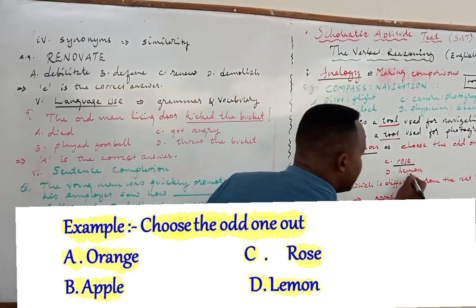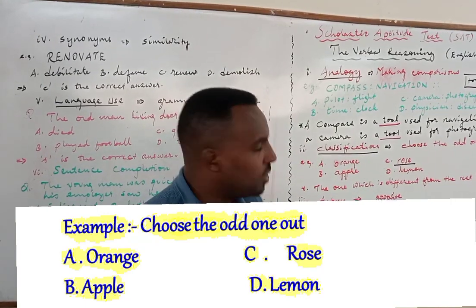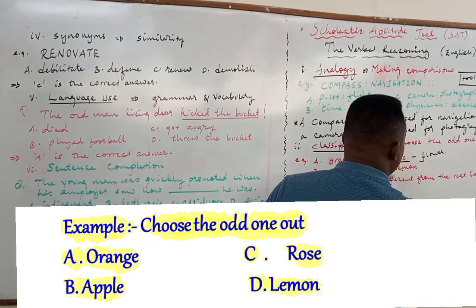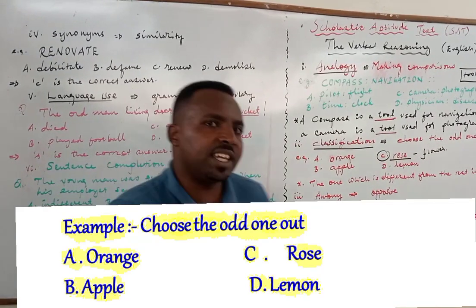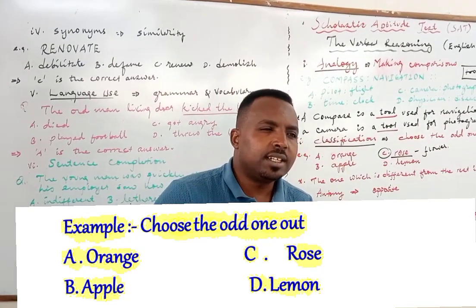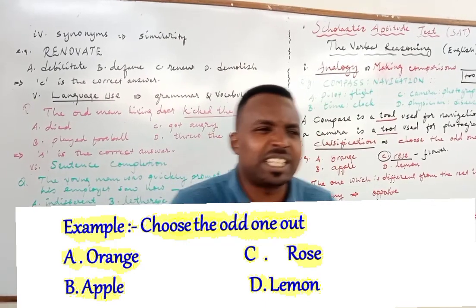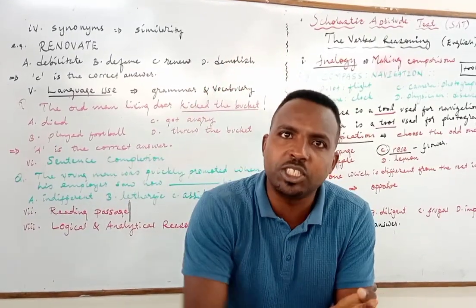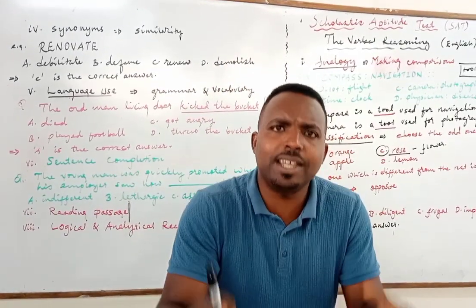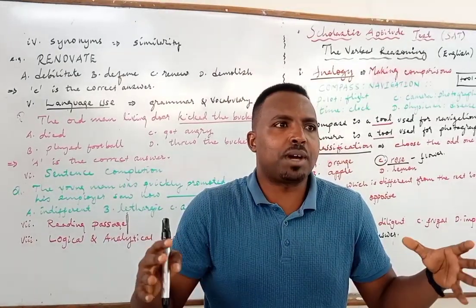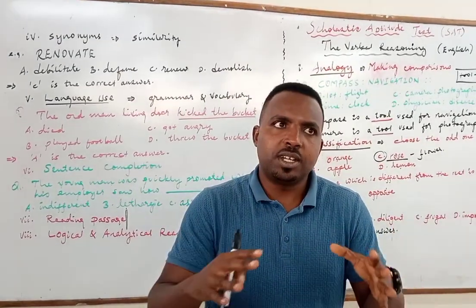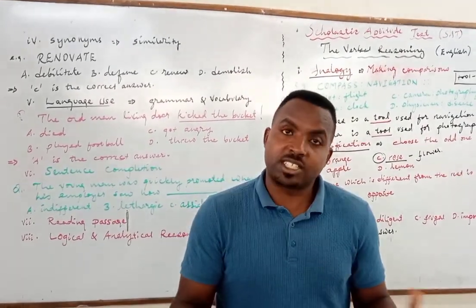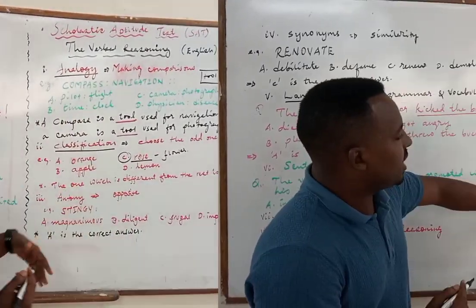For example: orange, apple, rose, lemon — which one is different? Obviously rose is different, because it's a flower. The rest — orange, apple, and lemon — are all fruits. Rose is a flower, so this is the one which is different. It's very easy. At times you just need knowledge in biology, geography, or chemistry — it's interdisciplinary, so someone with good general knowledge may find it easier.